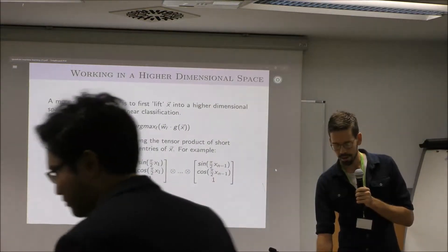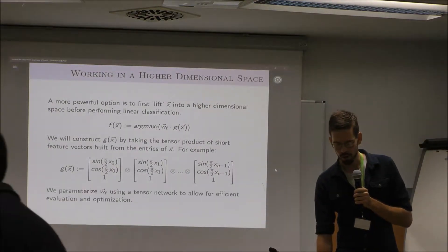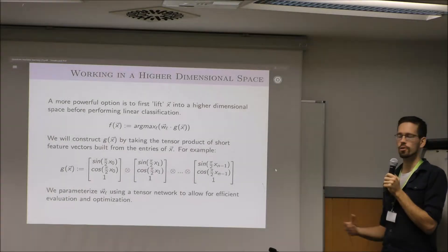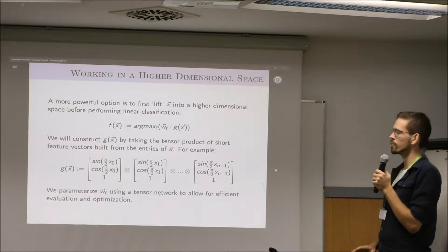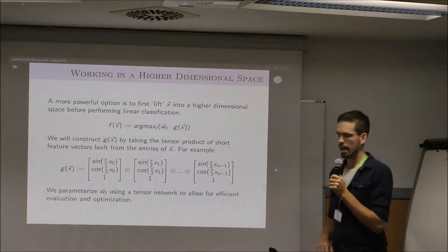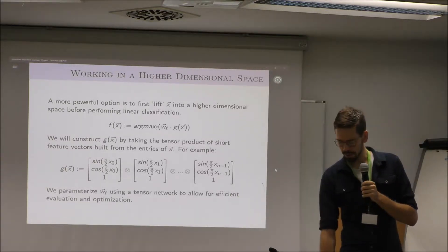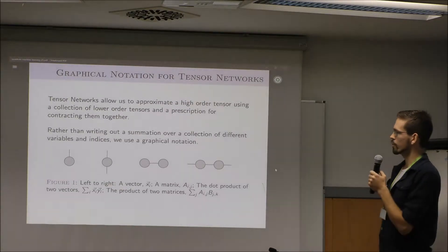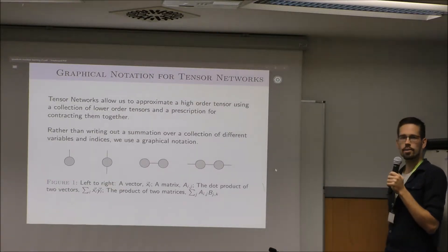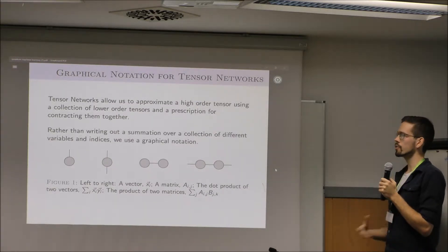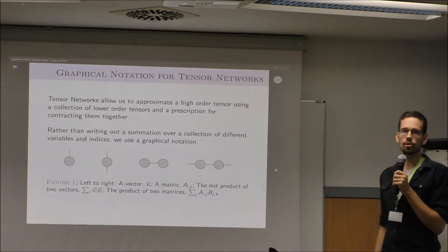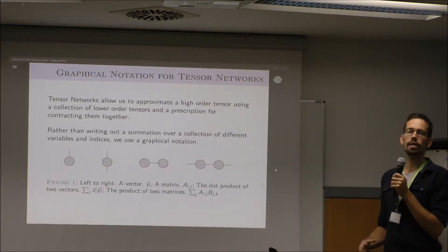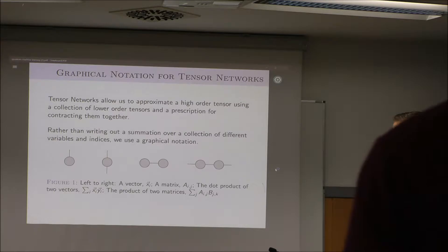For now, we're thinking about doing this classically. So we want some different characterization of our weights that we can manipulate and store classically in neural networks. At this point in the talk, I could tell you what a tensor network is, or at least give a little introduction. The idea is that a tensor network is just a nice tool for representing some very high-order tensor as a collection of lower-order tensors, and some rule for contracting them together to recover the larger object.